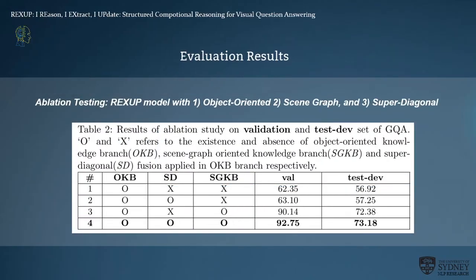We conducted an ablation study to examine the contribution of each component: the object-oriented knowledge branch (OKB), the scene graph-oriented knowledge branch (SGKB), and superdiagonal fusion (SD) to our deep reasoning model RECSUB. Overall, we found that integrating object-oriented and scene graph features is very crucial for better VQA performance. Using only the OKB branch causes a significant performance drop — around 30% on the validation set and 16% on the test dev set — proving the importance of the scene graph in capturing semantic object relation structure from images.